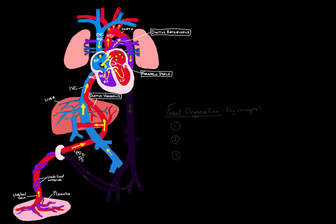Now we're in the left atrium. This nicely oxygenated blood from the IVC has crossed over. In the left atrium, it gets joined by some poorly oxygenated blood from the lungs through the four pulmonary veins — but since the lungs aren't ventilated in utero, there's not much perfusion to the lungs, so it's a very small amount. This blood then goes through the mitral valve and is ejected by the left ventricle out into the aorta, where the saturation is around 65% — we've preserved that oxygenation pretty well.